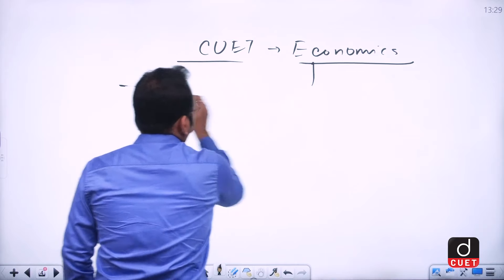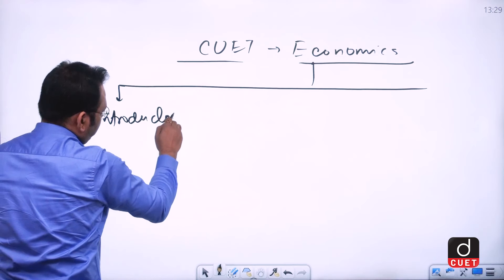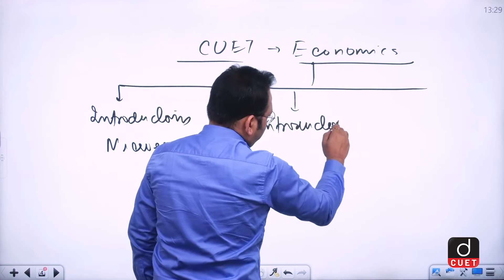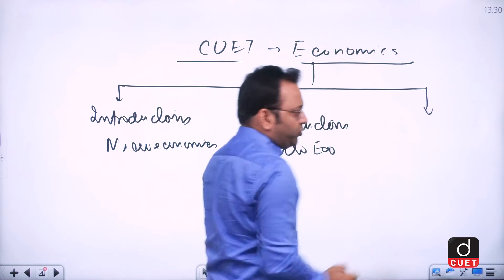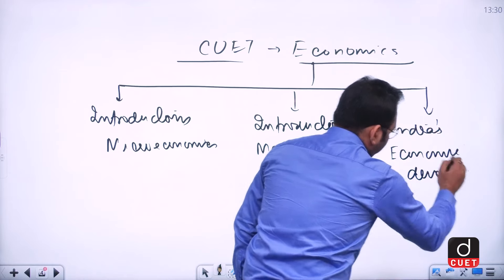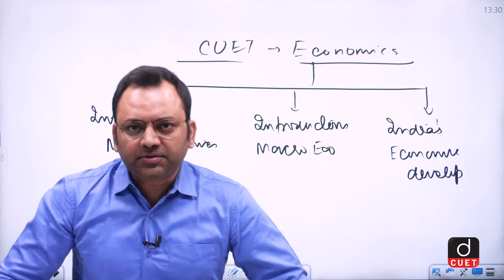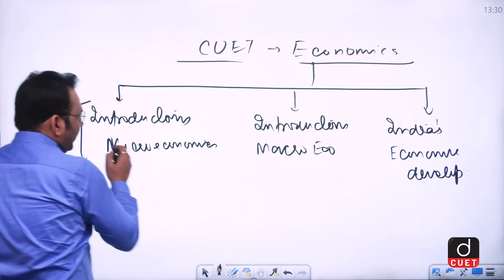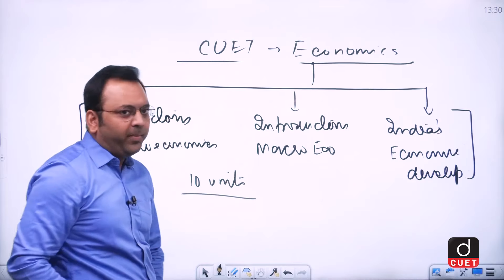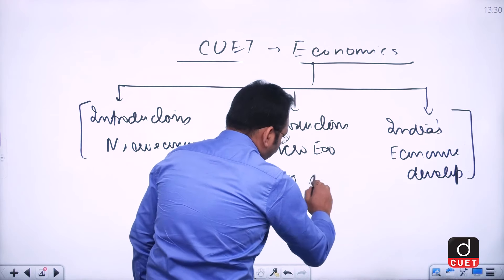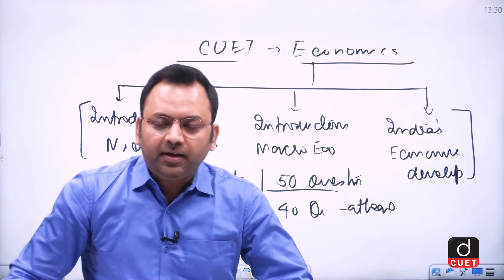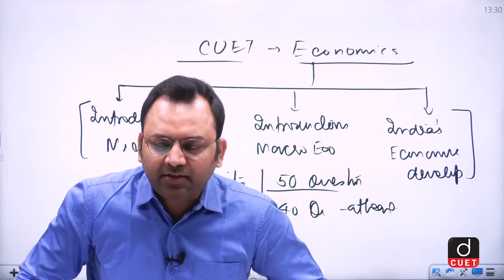The first part is introductory microeconomics, the second part is introductory macroeconomics, and the third part is India's economic development. The whole syllabus has three major broad parts which are further divided into 10 units. The paper will have 50 questions, out of which at least 40 will have to be attempted to qualify for entry to central universities for the undergraduate program.